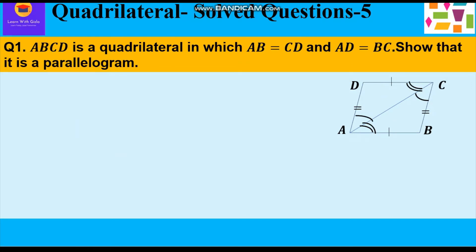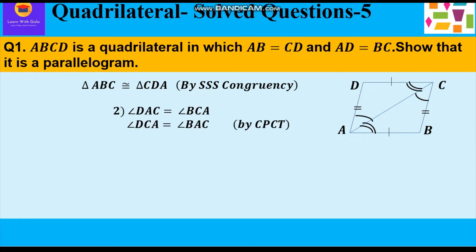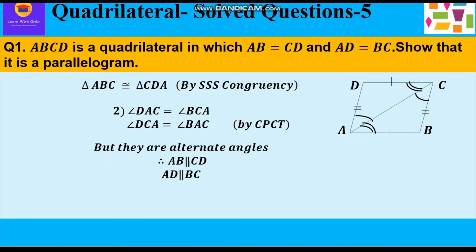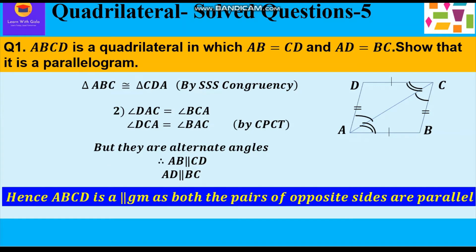After proving the two triangles are congruent, we can say that angle DAC equals angle BCA and angle DCA equals angle BAC by CPCT — corresponding parts of congruent triangles are equal. These are also alternate interior angles, so AB is parallel to CD and AD is parallel to BC. Hence ABCD is a parallelogram, as both pairs of opposite sides are parallel.